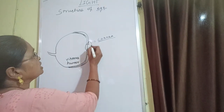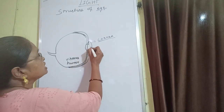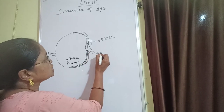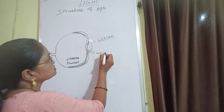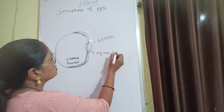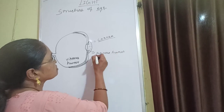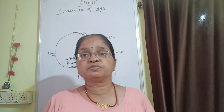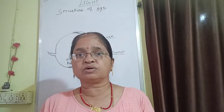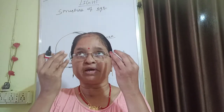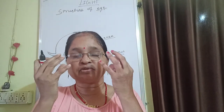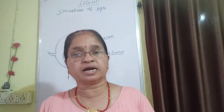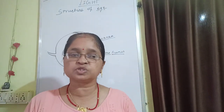Just beside the cornea, there is a watery fluid that is known as aqueous humor. If you look at any eye, you will always find that one fluid or water is present inside the eye — that is known as aqueous humor.